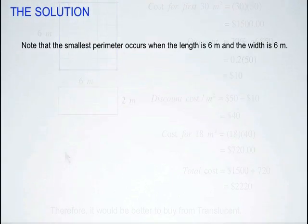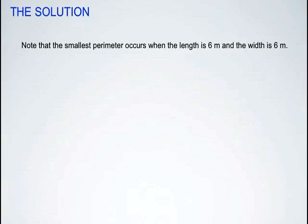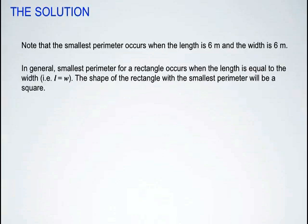So our solution to this problem is that the smallest perimeter occurred when the length was 6 and the width was 6. And in general, we can conclude that the smallest perimeter for a rectangle occurs when the length is equal to the width, and the shape of the rectangle with the smallest perimeter will be a square.